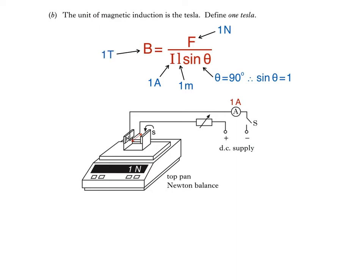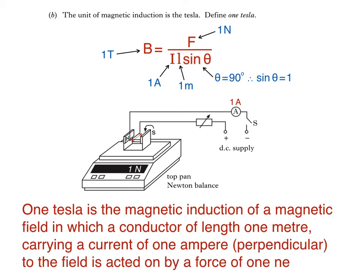Then it follows that the magnetic induction B must be equal to 1 Tesla. This is the basis for our definition. So we can say that 1 Tesla is the magnetic induction of a magnetic field in which a conductor of length 1 metre, carrying a current of 1 amp, perpendicular to the field, is acted on by a force of 1 newton. The key to this definition is remembering which equation to use at the start.